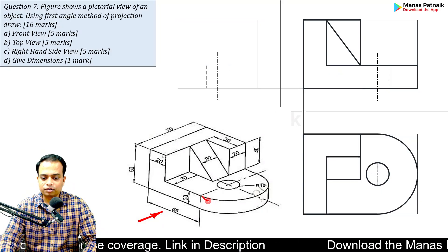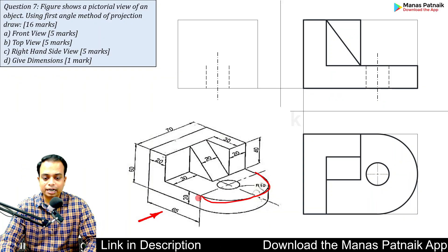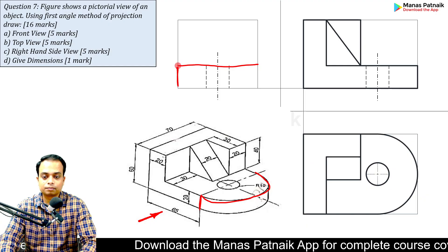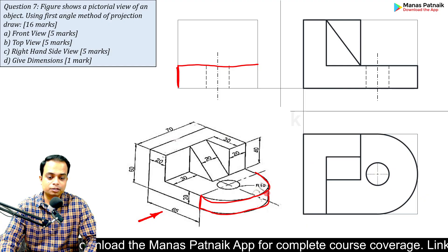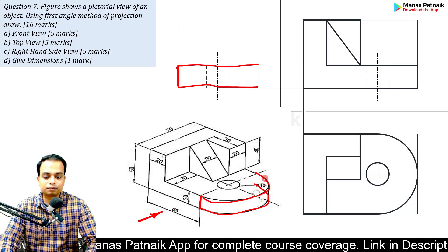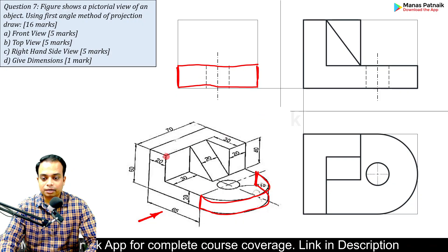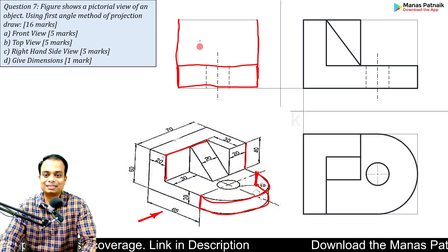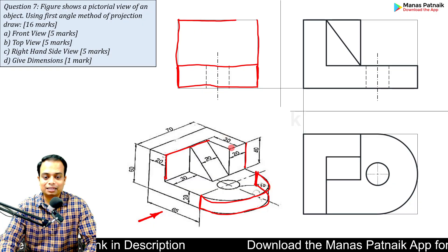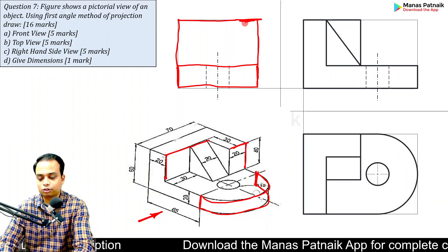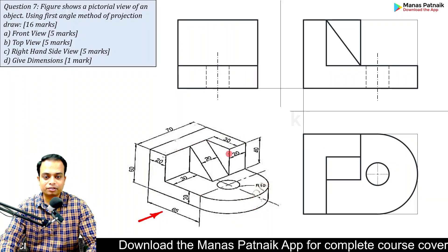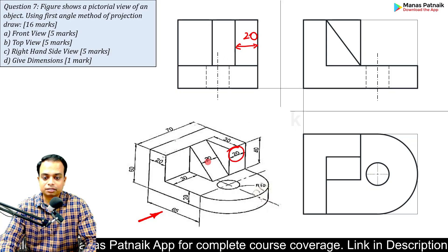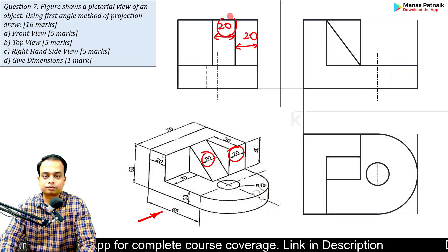Now we're left with the side view. The first thing you experience is this straight edge, then this, then this — the semicircle will obviously look like a straight edge from the side — then this, then this, then this. And then this, and 20 millimeters here. The only thing left is the rectangle: this distance is 20, so again 20. Done.